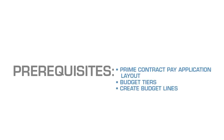There are several prerequisites prior to modifying and managing totaling instructions in Gate 3. You must ensure that the Prime Contract Pay application layout and budget tiers have been created for your project. You must also ensure that you have created budget lines before you can proceed. There are two ways to manage totaling instructions in Gate 3: system generated totaling instructions and modifying totaling instructions. In this video we will demonstrate how to modify totaling instructions.